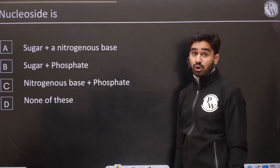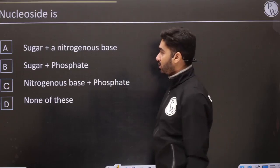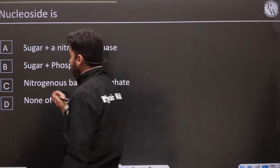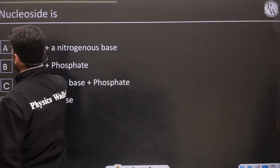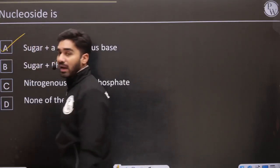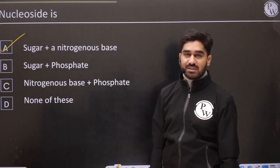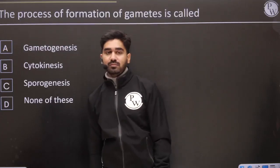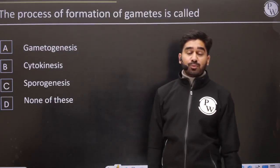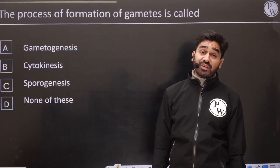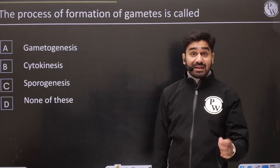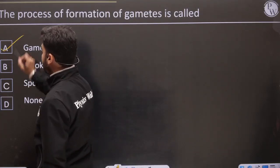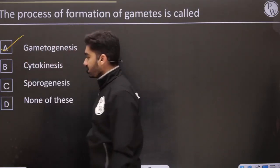Nucleoside: what does a nucleoside contain? A nucleoside has a sugar and a nitrogenous base. Next: the process of formation of gametes — that process is gametogenesis. Sporogenesis is when spores are formed.